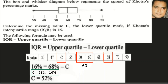Using Kotso's marks and substituting into the formula: we have 16 as the interquartile range, 68 as the upper quartile, minus C. Making C the subject of the formula — as done in Grade 9 equations work — we move C to the other side and move 16 across, giving us 68 minus 16, and we arrive at a final answer of 52.